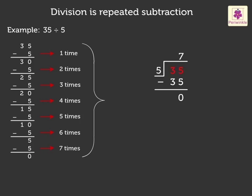Here, the number 35 is the dividend, the number to be divided. Number 5 is the divisor, the number that divides the dividend. Number 7 is the quotient, the answer that we get on dividing the numbers. And number 0 is the remainder, the number that remains after dividing.